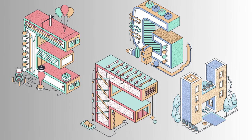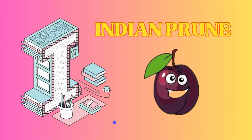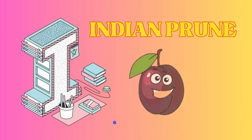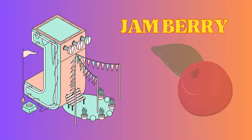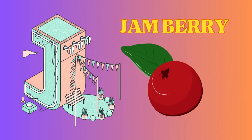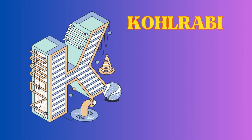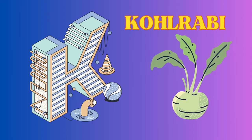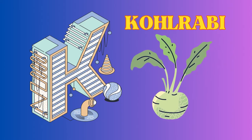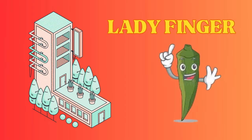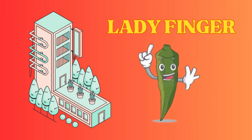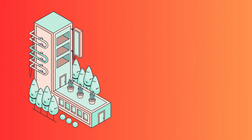I is for Indian prune, Indian prune. J is for jamberry, jamberry. K is for kohlrabi, kohlrabi. L is for lady's finger, lady's finger.